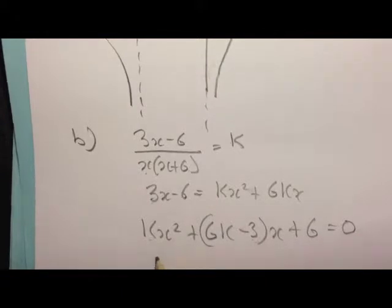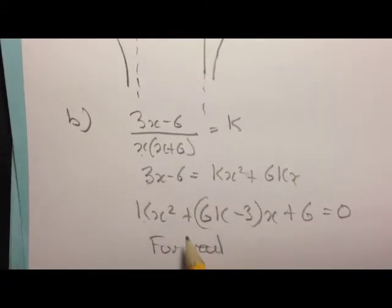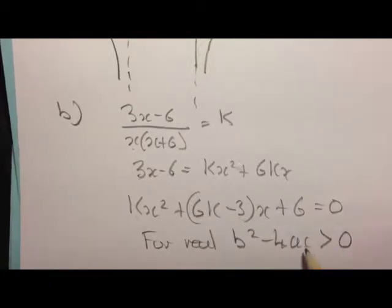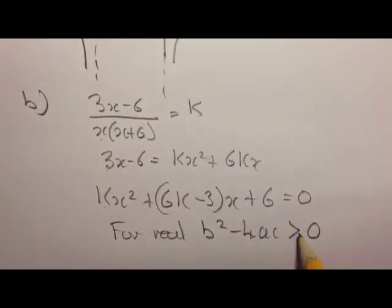Then for real roots, we discriminate between quadratics that have real roots and those that don't by saying b squared minus 4ac must be greater than or equal to 0, because it could be real distinct roots or the same roots. So you have to account for the case where it equals 0 also.